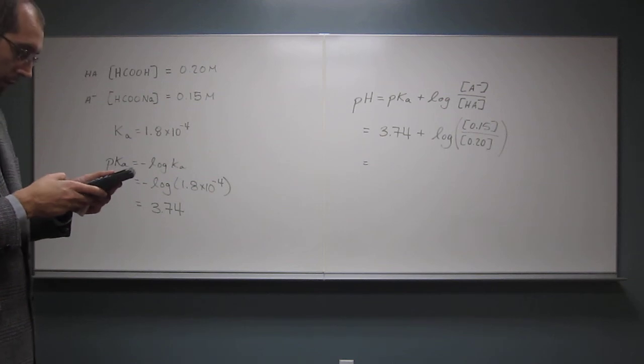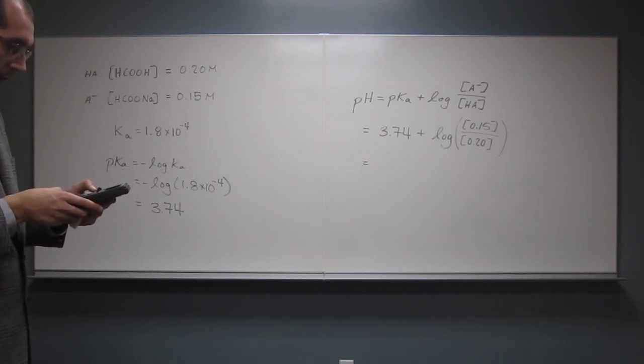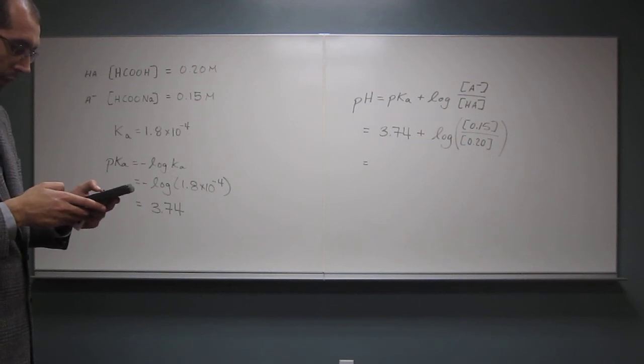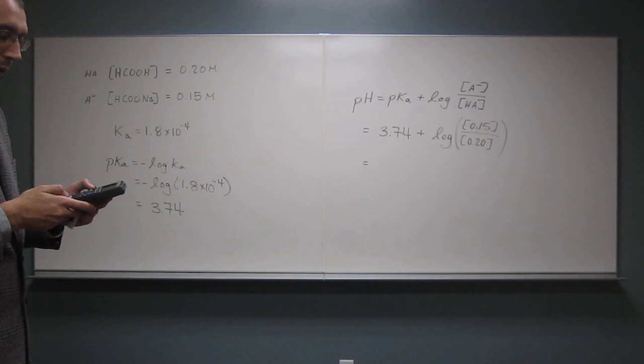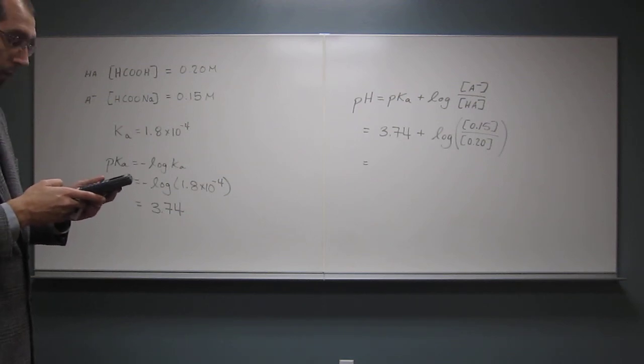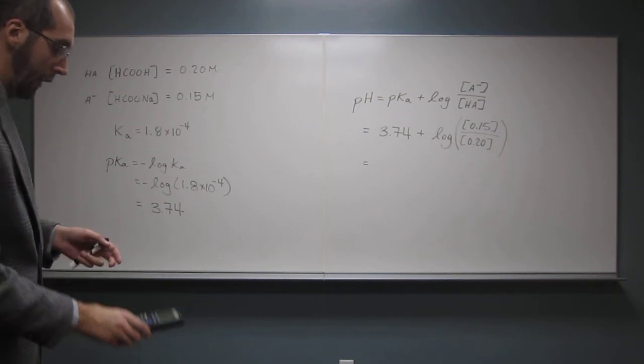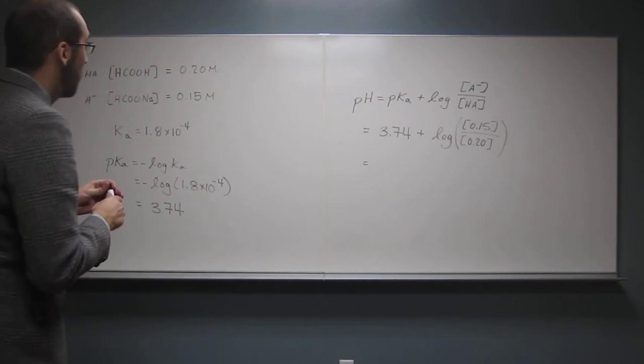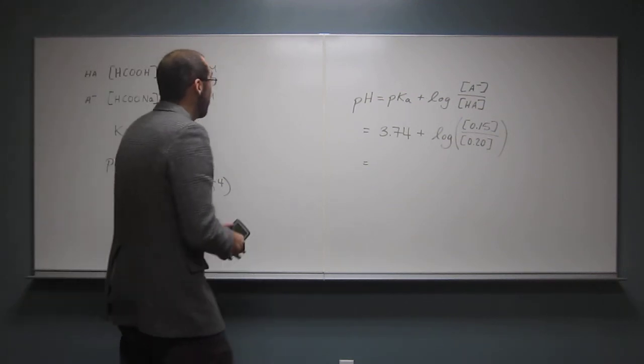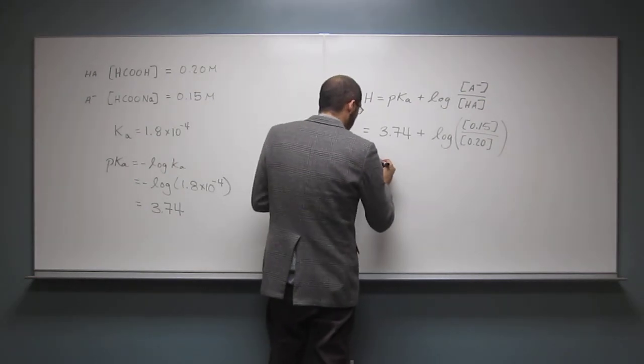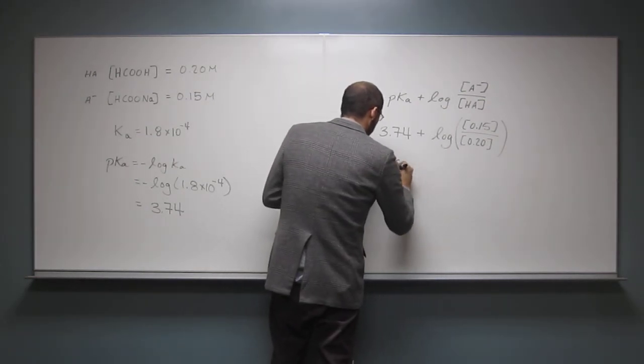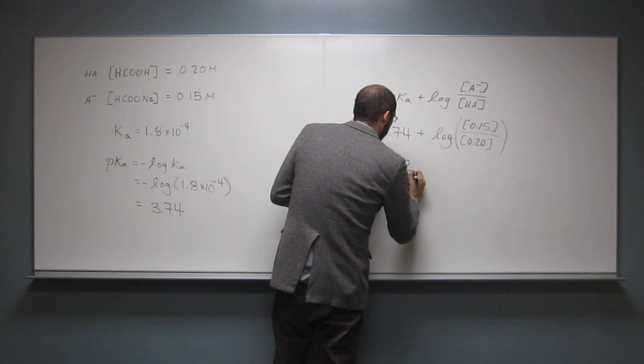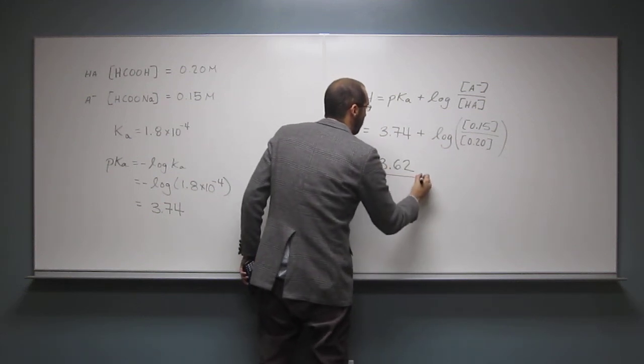So 0.15 divided by 0.20, take the log of that, negative 0.125, and add that to 3.74, and I get to 3 digits, 3.62, and that's going to be the pH.